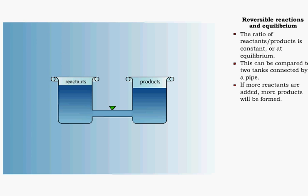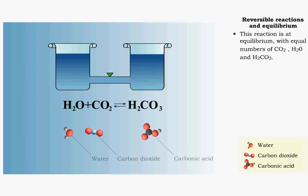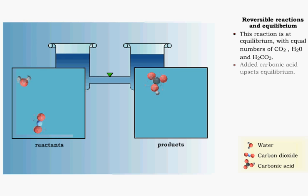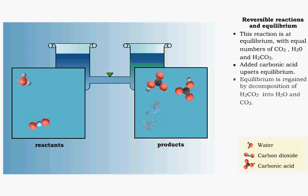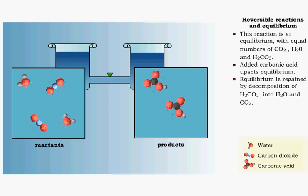In this example, carbon dioxide and carbonic acid are in equilibrium. Additional carbonic acid molecules will upset the equilibrium. Some of the carbonic acid breaks down into water and carbon dioxide. This restores the balance between reactants and products.